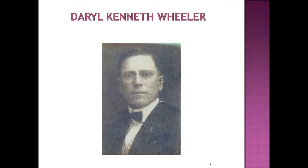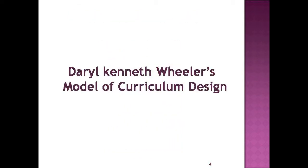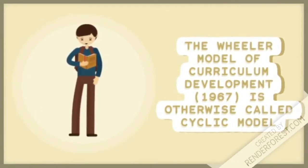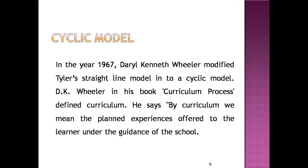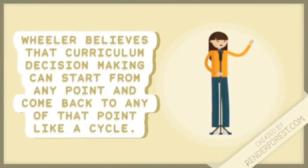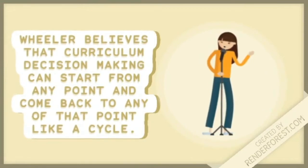Darrell Kenneth Wheeler's model of Curriculum Design is otherwise called the Cyclic Model. In the year 1967, Darrell Kenneth Wheeler modified Taylor's straight-line model into a cyclic model. In his book 'Curriculum Process,' Wheeler defined curriculum as: 'the planned experiences offered to the learner under the guidance of the school.' Wheeler felt that Taylor's model did not help students achieve the evaluative outcome or expected objectives, and it did not provide feedback. Wheeler believes that curriculum design making can start from any point and come back to any point, like a cycle.